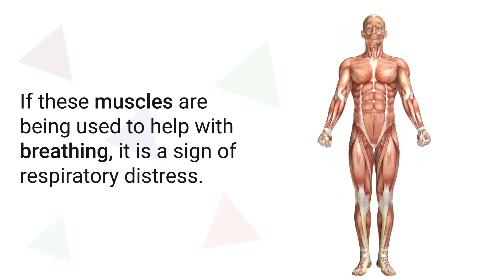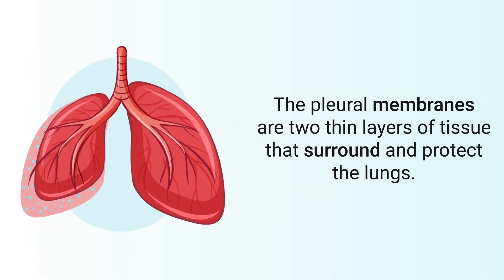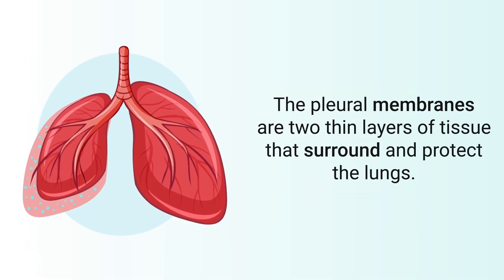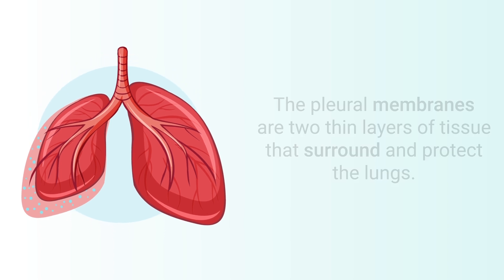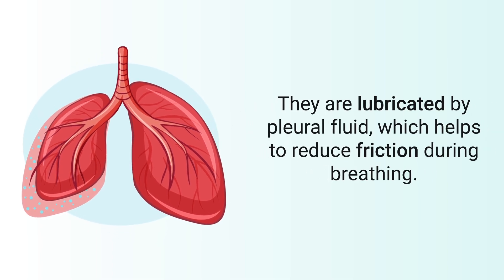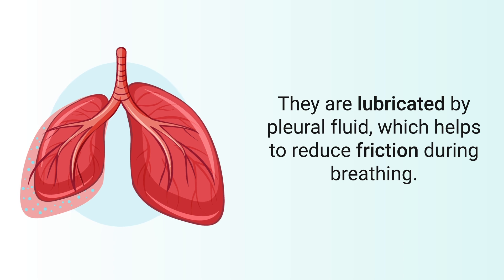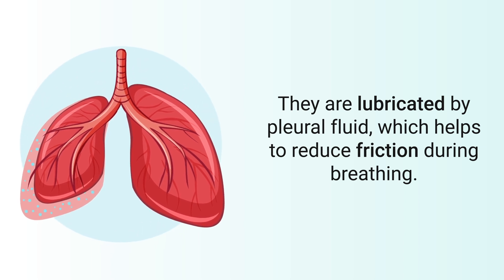The pleural membranes are two thin layers of tissue that surround and protect the lungs. They are lubricated by pleural fluid, which helps to reduce friction during breathing.